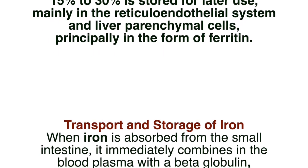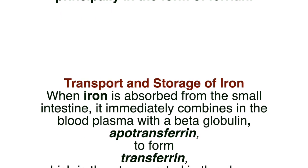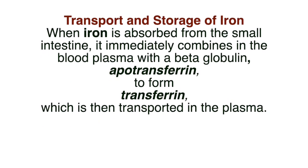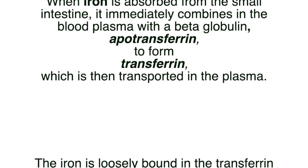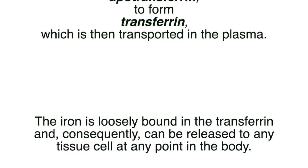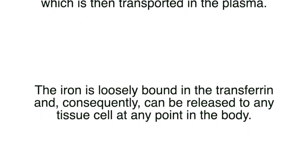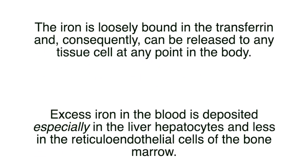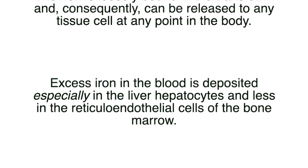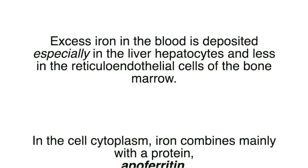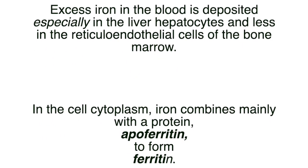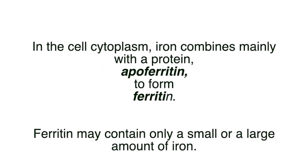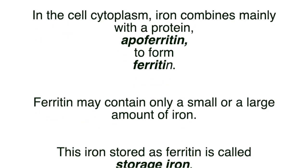Storage and Transport of Iron: When iron is absorbed from the small intestine, it immediately combines in the blood plasma with a beta-globulin called transferrin, which is then transported in the plasma. The iron is loosely bound in the transferrin and can be released to any tissue cell at any point in the body. Excess iron in the blood is deposited especially in liver hepatocytes and reticuloendothelial cells of the bone marrow, where it combines with the protein ferritin.